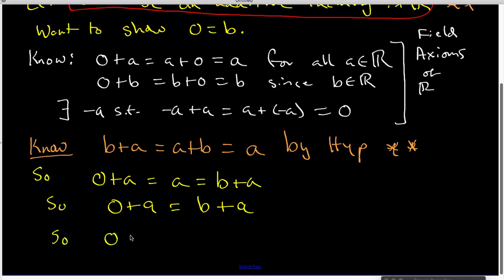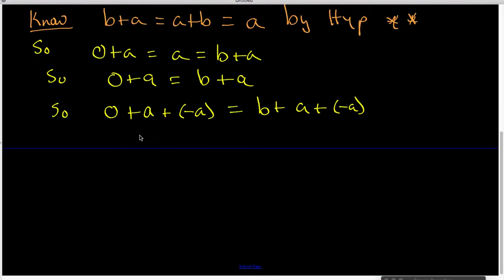So in other words, I've got 0+A+(-A) is equal to B+A+(-A). And I'm going to put parentheses around those two terms. I can do that because of the associative law. So what I'm now looking at is 0+0 is equal to B+0, but 0 plus anything is equal to the anything, so we wind up having 0 is equal to B, and we are done.